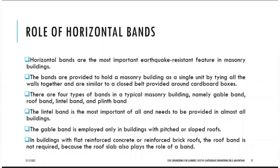Horizontal bands are provided at three areas: one at plinth level, another at lintel level, and the third at roof level. This makes a building into a single unit, connecting all walls together — similar to closed bands provided around cardboard boxes. There are four types of bands in masonry: gable band, roof band, lintel band, and plinth band.